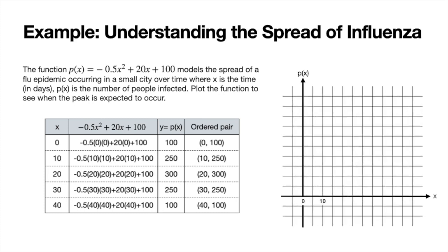We're just going to do intervals of 10 here on the x-axis, and then we'll do intervals of 100 on the y-axis. And then we're going to plot these points that we have. And once we have them all plotted, we're going to draw a line that connects them. So we can see that our peak corresponds to x is equal to 20. So what does that mean? The peak, the most number of people to be sick, is expected to be on day 20 with 300 people being sick.